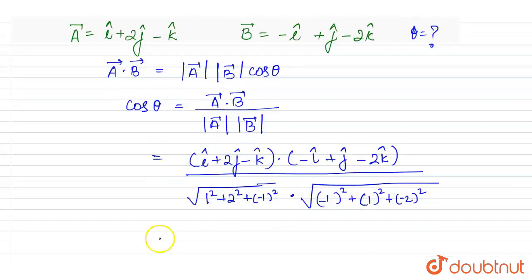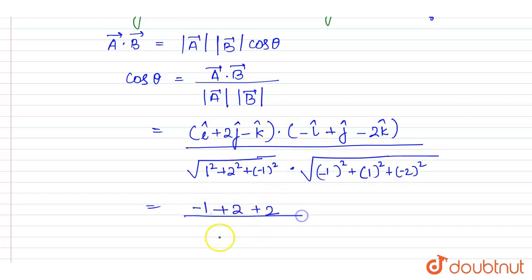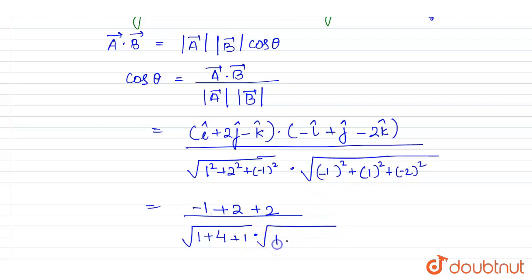Now computing a dot b: i dot minus i gives minus 1, plus 2j dot j gives plus 2, and minus k dot minus 2k gives plus 2. So a dot b equals minus 1 plus 2 plus 2. The denominator is root of (1 plus 4 plus 1) into root of (1 plus 1 plus 4).